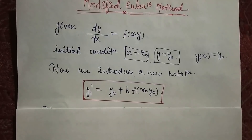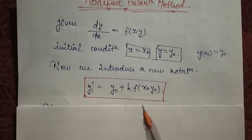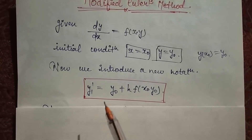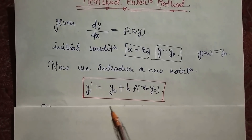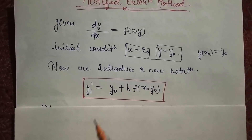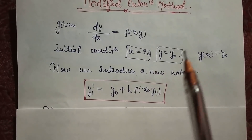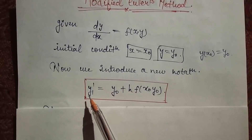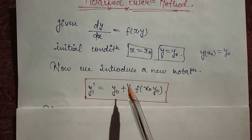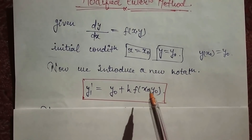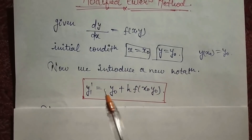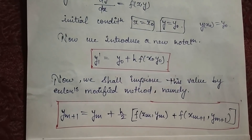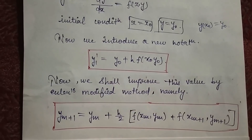This is your next step. Now we introduce a new notation — here we will find y1 dash. In Euler's method, we used to find y(i+1). This is exactly the same; only the notation has changed. The rest of the right-hand side is similar. So this next step is to find y1, and this is your last step.